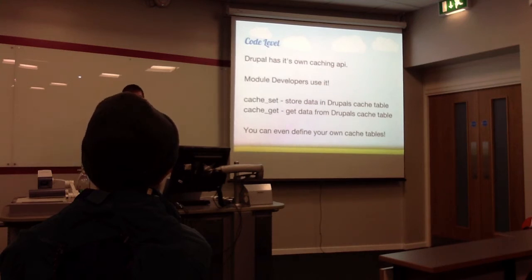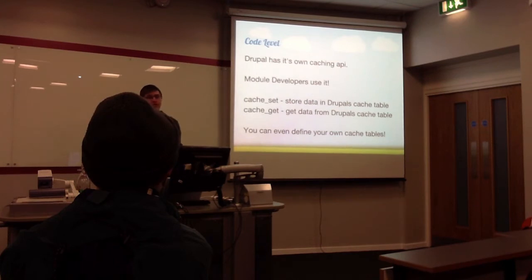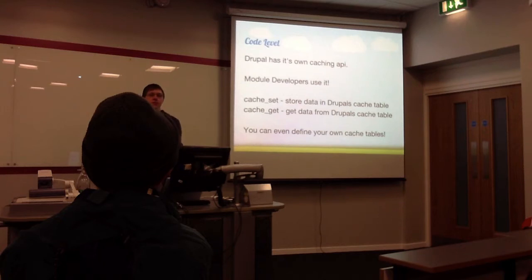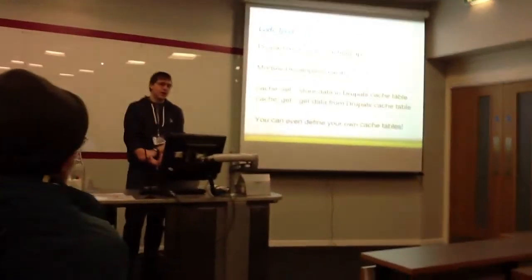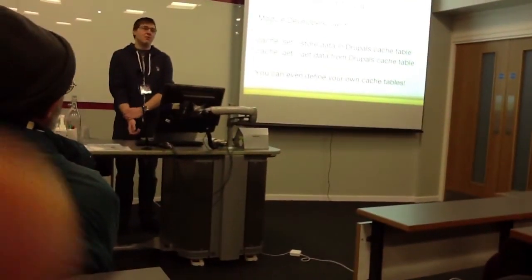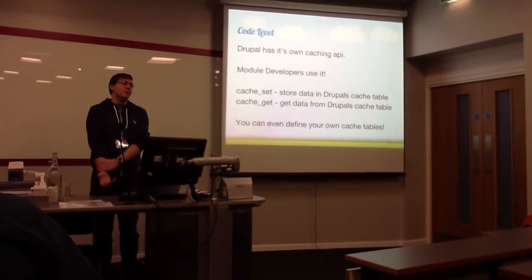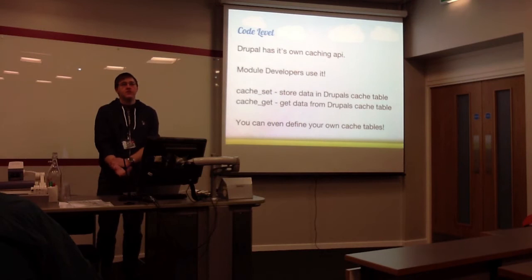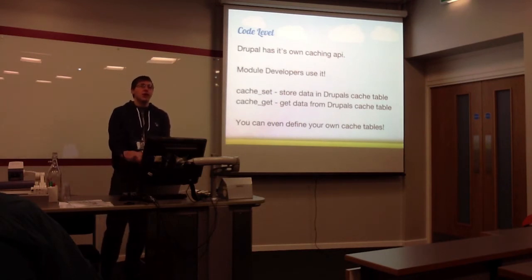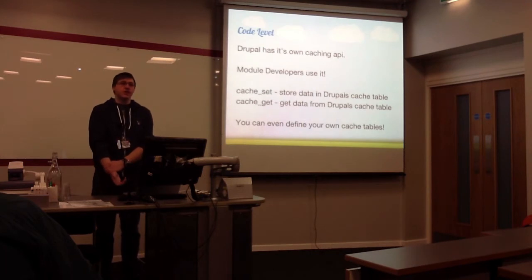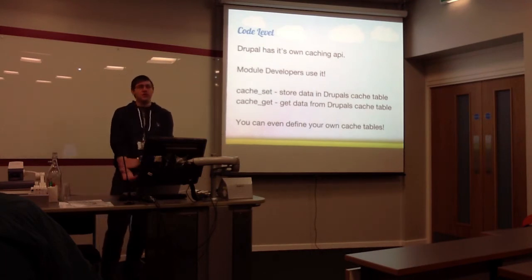At the code level, Drupal has its own caching API. Module developers should use it — if you're not, I suggest you look into it. Cache_set stores data in Drupal's cache table. If you've looked at a Drupal database, you'll see lots of tables with 'cache' prepended to them — this is Drupal's cache. Cache_get retrieves that cache. You can actually define your own caching tables, so you don't have to stick with Drupal's normal ones. For example, Views does this — there's a cache_views table defined by the Views module.